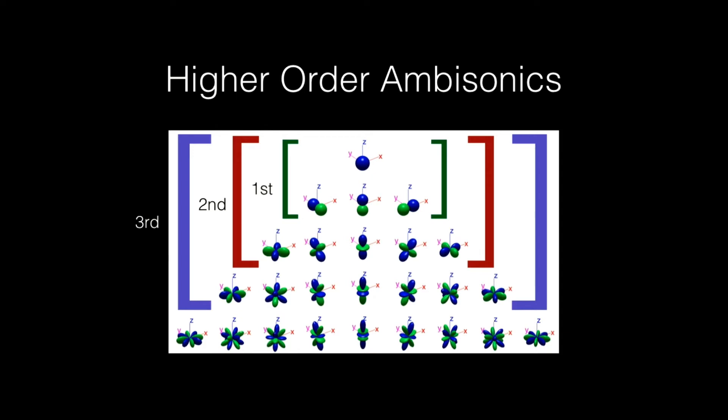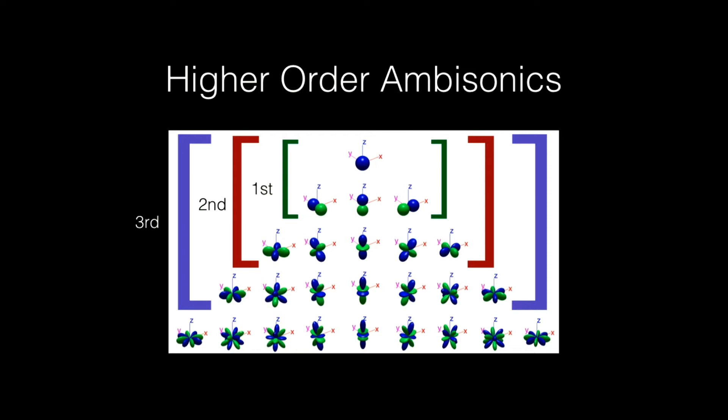This is a critical view of orders. This basically illustrates that the more channels you have, the greater the spatial resolution. I'm composing in third, fifth — seventh is very difficult, so a lot is in third order. You have two main channel orderings. The first is FuMa, which is W — your omni channel — X, Y, and Z as your height axis. FuMa is implemented as what we call B-format, a proprietary channel ordering for first-order ambisonic microphones such as the Soundfield.